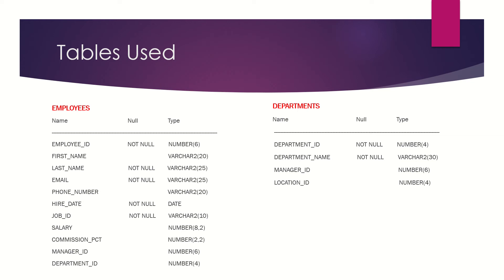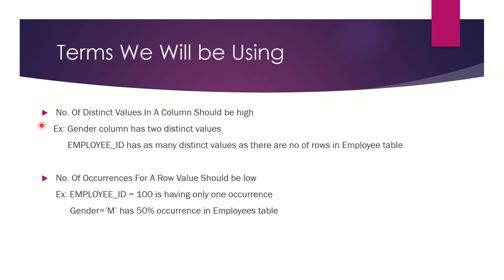There are other columns in the employees table like first name, last name, etc., and in the departments table we have department name, manager ID, etc., which are the non-primary key columns. These are the two terms which we will be frequently using — that is, the number of distinct values in a column and the number of occurrences for a specific row value. If we understand these two terms, 80% of the query tuning can be evaluated at this stage itself. So let's explore more on these two terms.